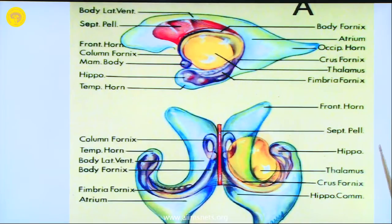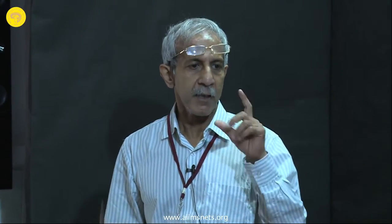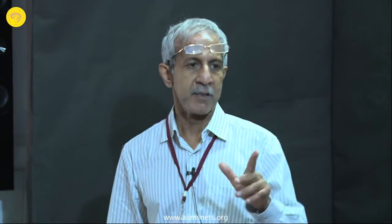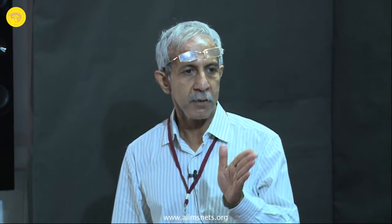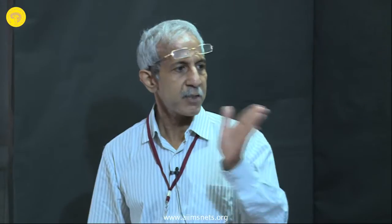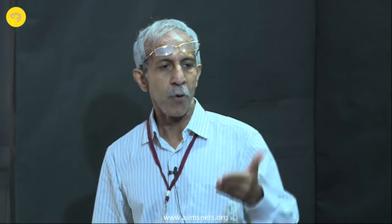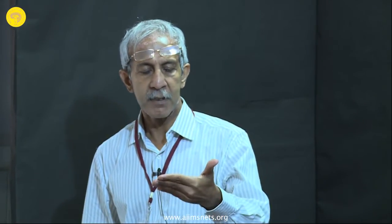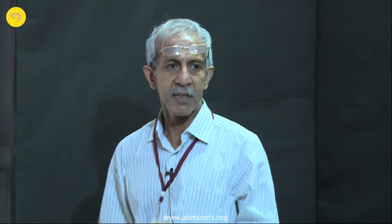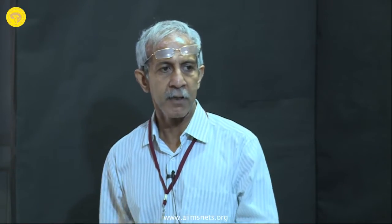The important thing when you are using a microscope or endoscope is what important structures to identify. When you are entering into the lateral ventricle or third ventricle, you must look at the bulge. The bulge you see from the medial side in the center is the thalamus, and the other important structure is the choroid plexus, which will help you orient towards the important structures.